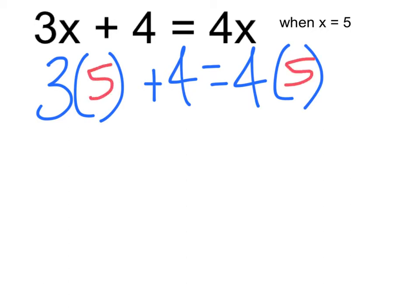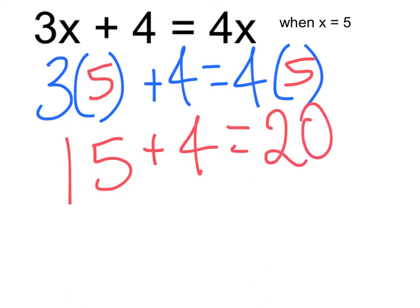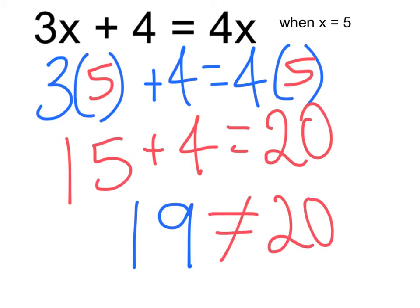I'm going to simply pop those in there. And 3 times 5 is 15 plus 4. And I know that 4 times 5 is 20. 15 plus 4, when we return to the left side, is 19. 19 does not equal 20. So this is going to be false. These two equations are not equivalent. They're not equal.